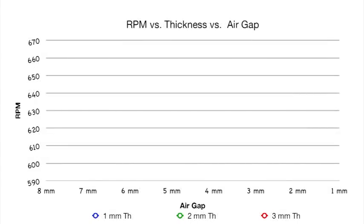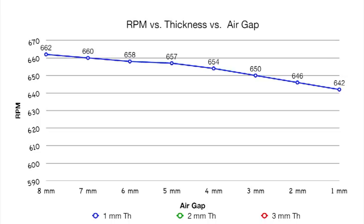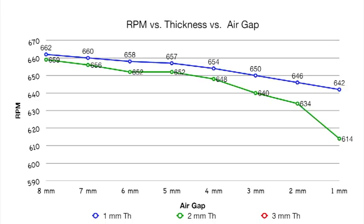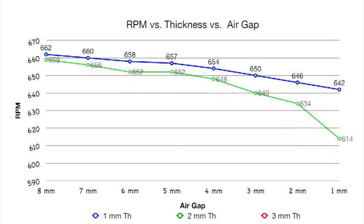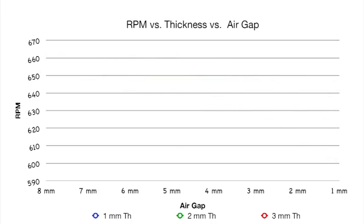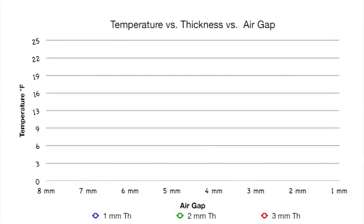Looking at RPM: going from 8mm to 1mm air gap, the 1mm thick copper drops from 662 down to 642 RPM — just a slight drop. The 2mm goes from 659 down to 614, and the 3mm goes from 656 all the way down to 600. So the 3mm is taking about a 10% hit on speed, while this drill runs at 665 RPM with no load at all.